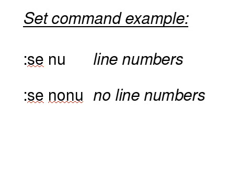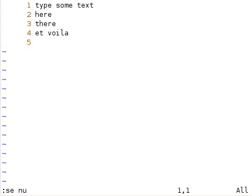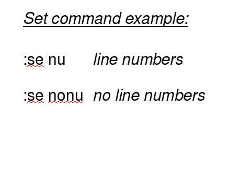VI has many so-called set commands to define how the editor should behave. One useful to me is to display the line numbers with `set nu`. I have to be in command mode, then type colon `set nu`. I can undo the display by typing `set nu` again, but let's leave it on to demonstrate the next feature.